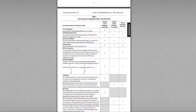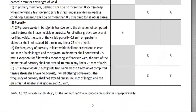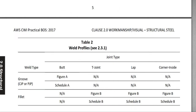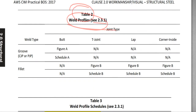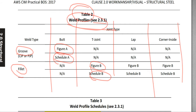Last time I stopped at Table 1 and explained everything there. Today I'm going to talk about Table 2, Weld Profiles, C2.3.1, which says see Table 2, Table 3, Figure A, and Figure B. Table 2 covers Group Weld and Fillet Weld, with columns for Butt Joint, T-Joint, Lap Joint, Corner, and Inside Joint. Group Weld is Figure A and Schedule A; Fillet Weld is Figure B and Schedule B.